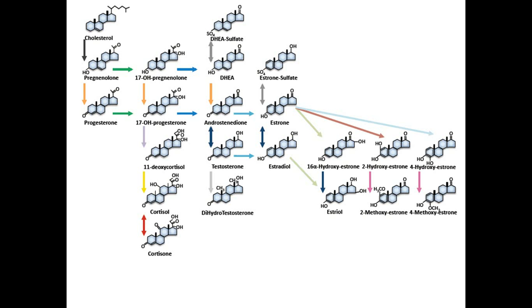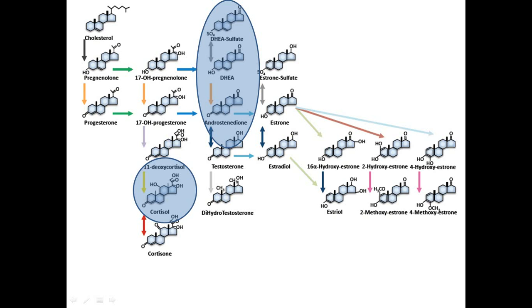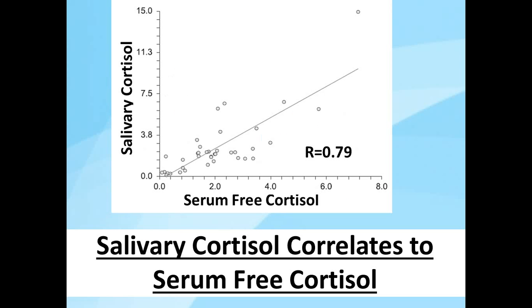With adrenal hormones, you're typically looking at cortisol and either DHEA or DHEA sulfate, but of course the adrenal glands are also making hormones like androstenedione and aldosterone and some others.